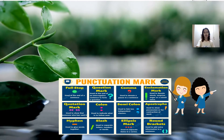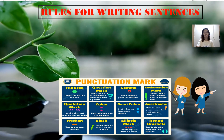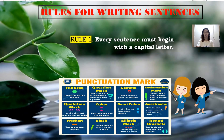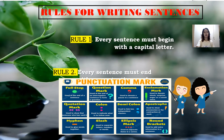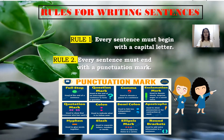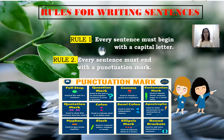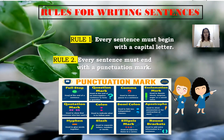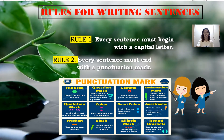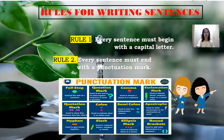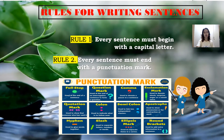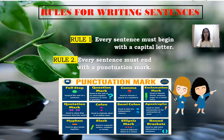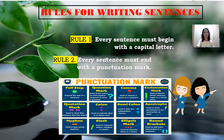Let's move forward to the rules for writing sentences. Rule number one: every sentence must begin with a capital letter. Rule number two: every sentence must end with a punctuation mark. To gain more knowledge on this topic, let us watch the videos on the next slides. The first video tackles punctuation marks, while the second video talks about the different types of sentences.